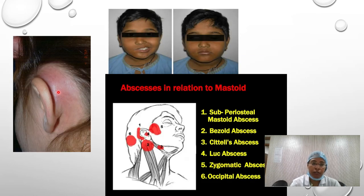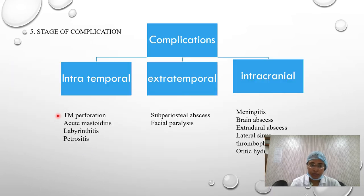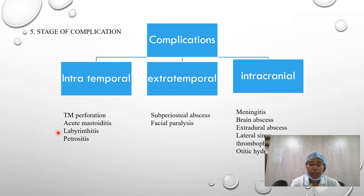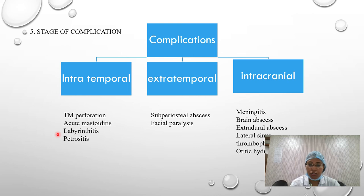Patients with acute mastoiditis show erythema of the mastoid region with pain, tenderness, and lateralization of the pinna. Prompt treatment is needed to prevent further sequelae. The third intratemporal complication is labyrinthitis — infection or toxins from the middle ear spread through the oval or round window into the inner ear, involving the cochlea, vestibule, and semicircular canals, causing vertigo, nausea, and sometimes nystagmus.